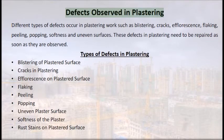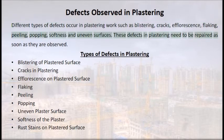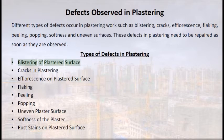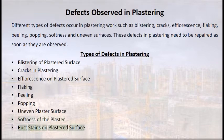Defects observed in plastering: different types of defects include blistering, cracks, efflorescence, flaking, peeling, popping, softness, and uneven surfaces. These defects need to be repaired as soon as they are observed. Types include: blistering of plastered surface, cracks, efflorescence, flaking, peeling, popping, uneven plaster surface, softness of plaster, and rust stains on plastered surface.